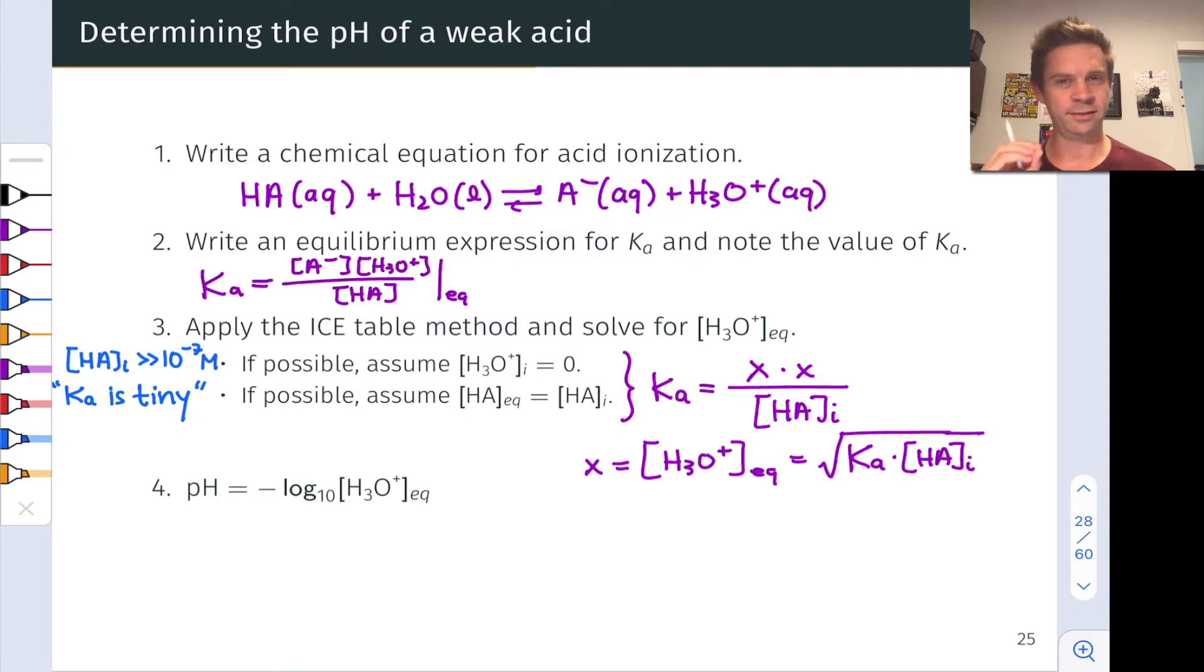I would hesitate to recommend to apply that formula every time because you want to question and evaluate these assumptions in each case that they actually apply. But assuming they do apply both the zero initial hydronium and the X is small with respect to the initial concentration of HA assumption, this formula will hold for the equilibrium concentration of hydronium.